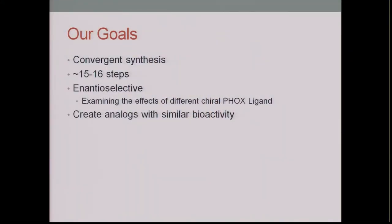Our goal was to synthesize viridin using a convergent synthesis, which allows us to make two separate molecules, combine them, and carry that through further steps of chemistry. We hope to complete the synthesis in 15 to 16 steps in an enantioselective fashion, using different chiral Fox ligands to determine whether the methyl group positions in front of or behind the plane. This convergent approach also enables us to create analogs with similar bioactivity.